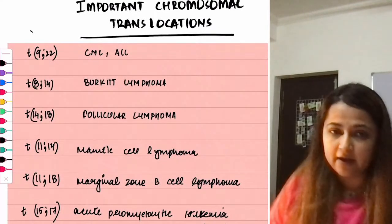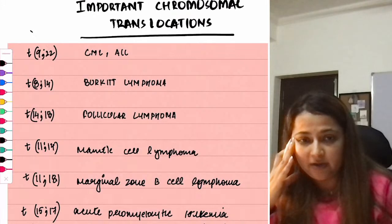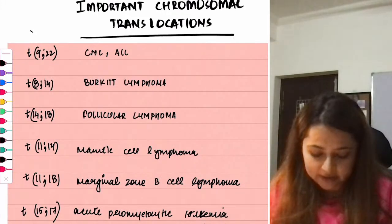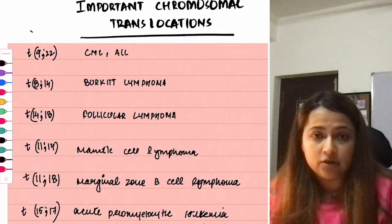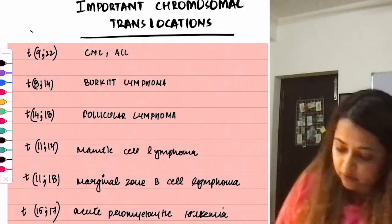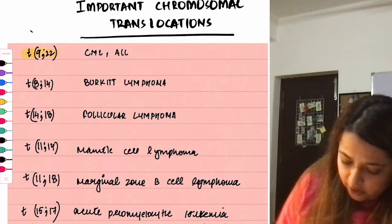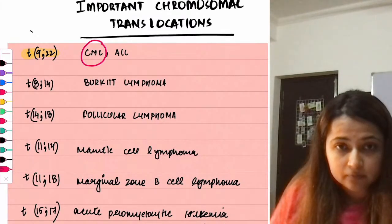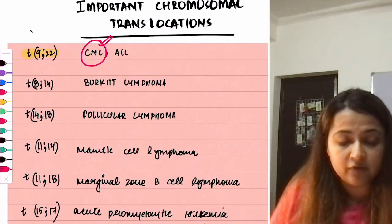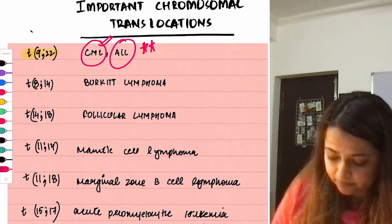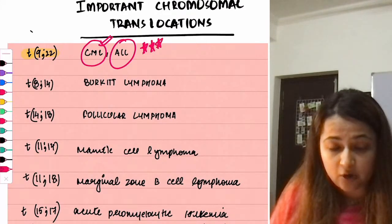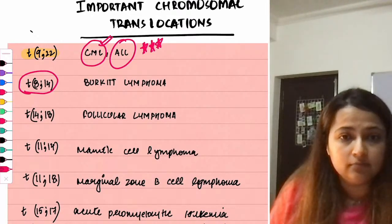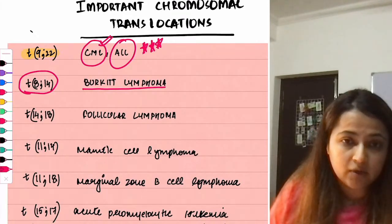Translocations — very high yield for INICET, CT, and NEET. t(9;22): Philadelphia chromosome — associated with CML, and if CML is not an option, mark ALL. t(8;14): Burkitt lymphoma — keywords are a child presenting with jaw mass and starry sky appearance on histopathology.